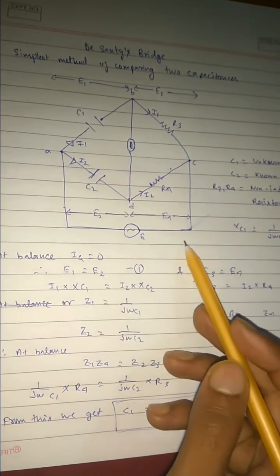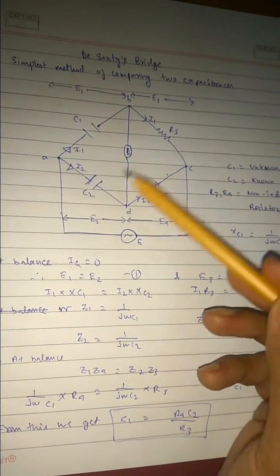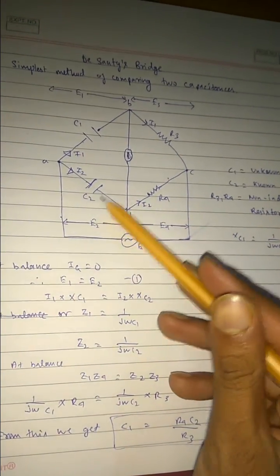So at balance condition what happens? Z1 into Z4 equals to Z2 into Z3.